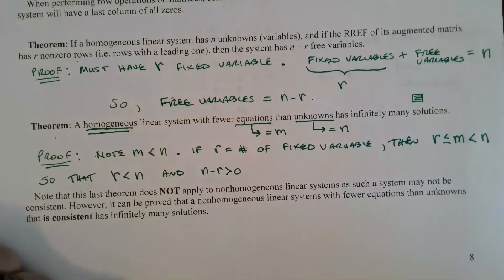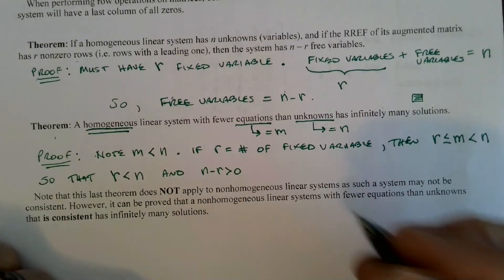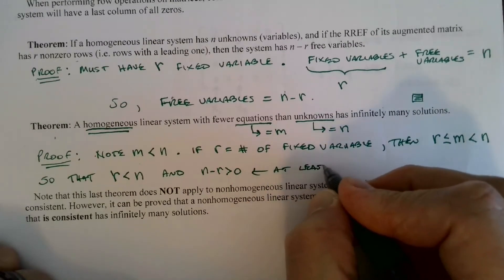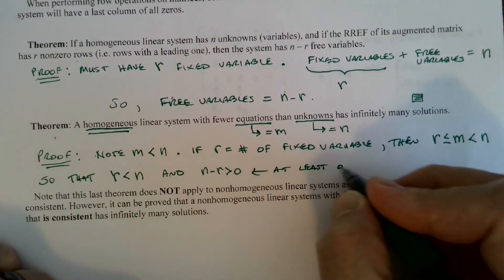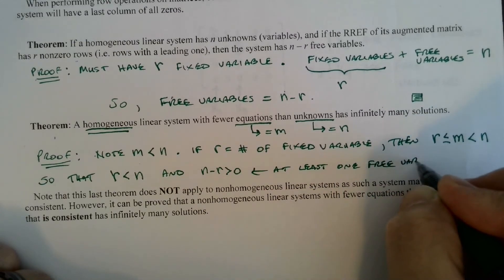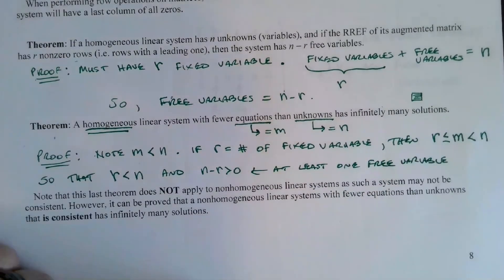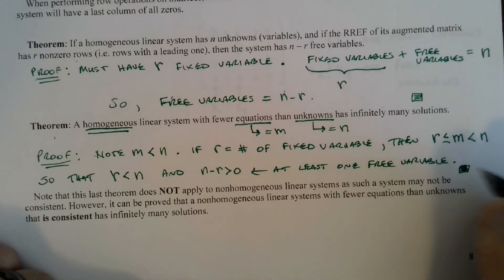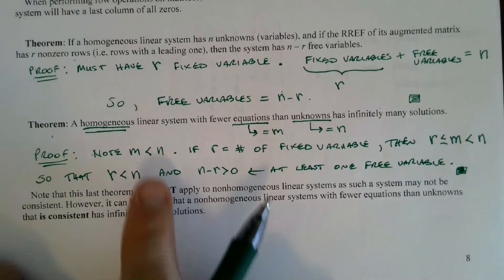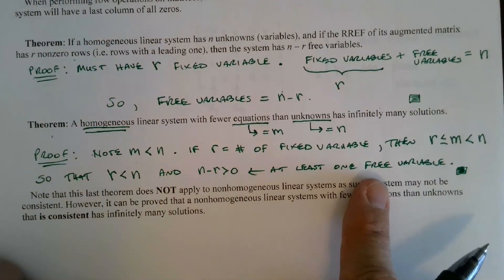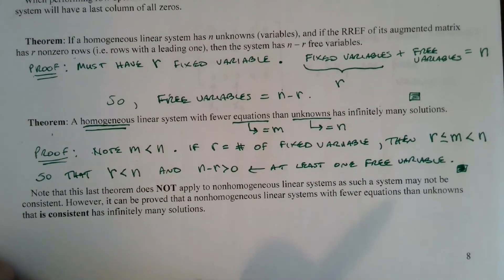N minus R is the number of free variables, so it means we have at least one free variable. And what does it mean if we have at least one free variable? We have infinitely many solutions. For any consistent system — and homogeneous systems are always consistent — if we have at least one free variable, one parameter, we're going to have infinitely many solutions.